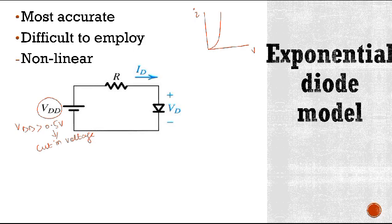It means this is the point after which the current is rapidly increasing. So, this is what we call cut-in voltage, which is 0.5 volts.